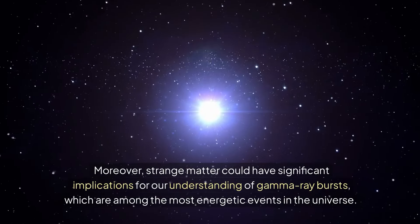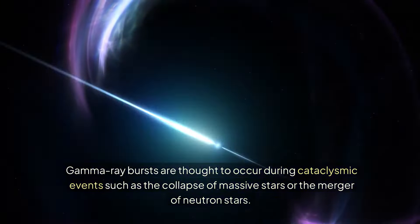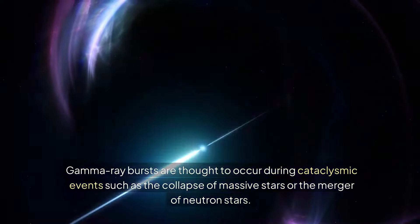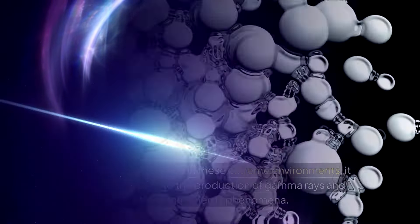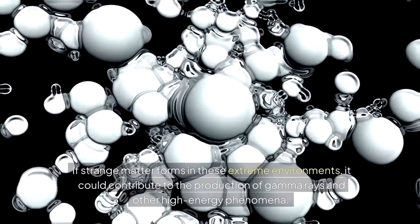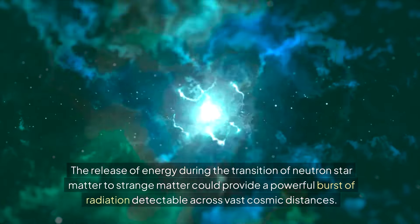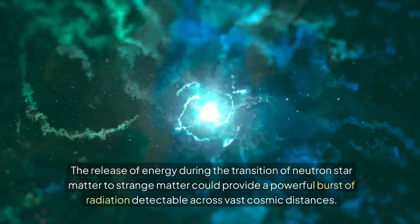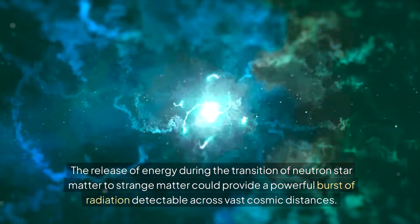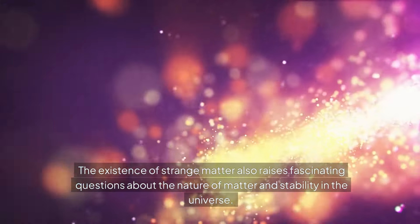Moreover, strange matter could have significant implications for our understanding of gamma-ray bursts, which are among the most energetic events in the universe. Gamma-ray bursts are thought to occur during cataclysmic events such as the collapse of massive stars or the merger of neutron stars. If strange matter forms in these extreme environments, it could contribute to the production of gamma rays and other high-energy phenomena. The release of energy during the transition of neutron star matter to strange matter could provide a powerful burst of radiation detectable across vast cosmic distances.